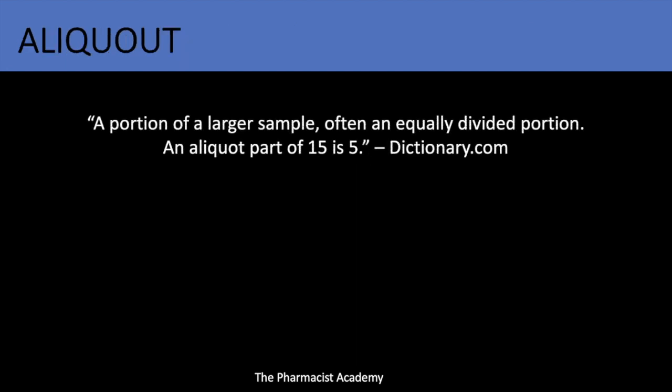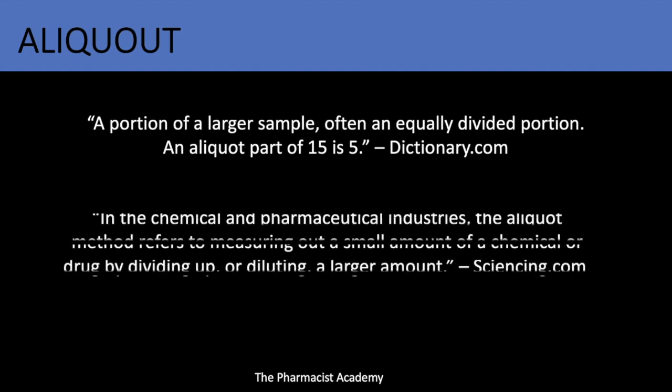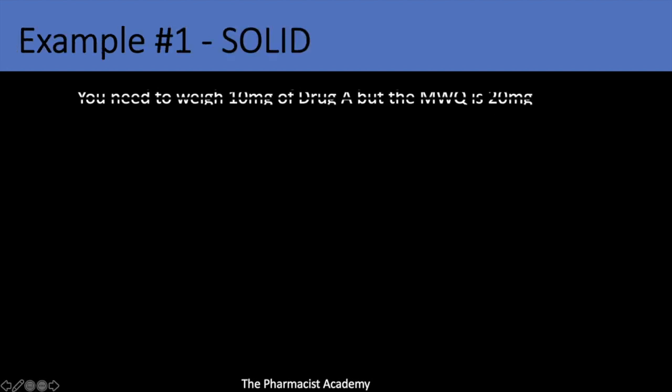An aliquot is a portion of a larger sample, often an equally divided portion — for example, an aliquot part of 15 is 5. In the chemical and pharmaceutical industries, the aliquot method refers to measuring out a small amount of a chemical or drug by dividing up or diluting a larger amount. Let's take a look at some examples.